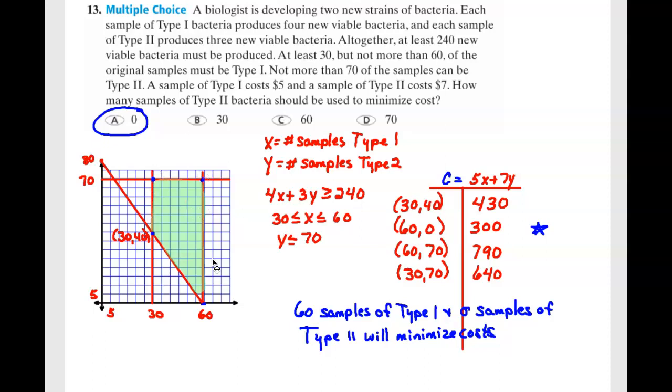Giving you four vertices, which are identified in the table here. Finding their cost, we see that the minimum cost occurs at (60,0). Which would make sense because type 2 costs more than type 1.